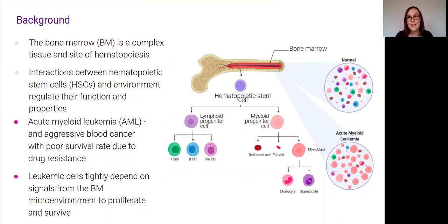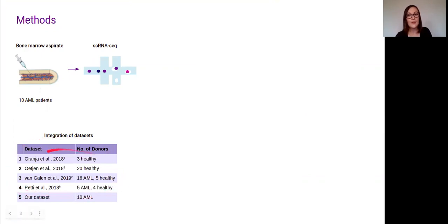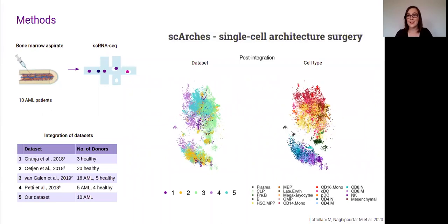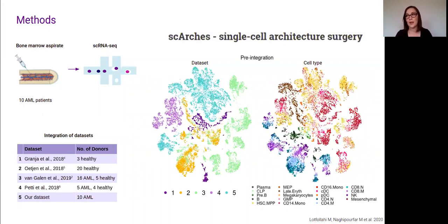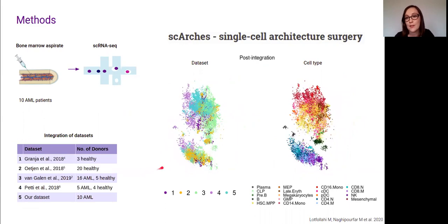So that's what we have set out to characterize. We performed single-cell RNA sequencing on bone marrow aspirates from 10 patients with AML, and then integrated the data with publicly available datasets from both healthy and AML bone marrow. Because there's so much heterogeneity between AML patients, we figured it was really important to include as many donors as possible. We used a tool called SC Arches, which uses a machine learning approach to overcome batch effects between samples, and it does a really good job of mixing the datasets so that cells cluster by cell type.